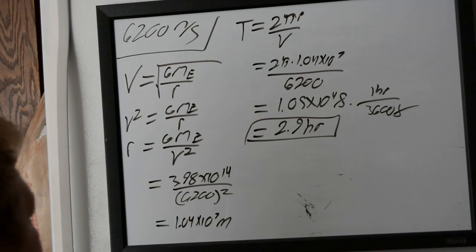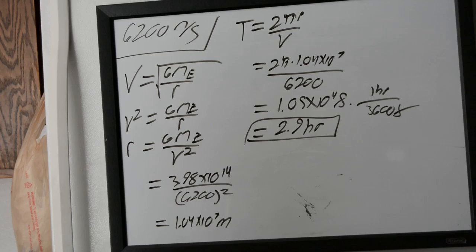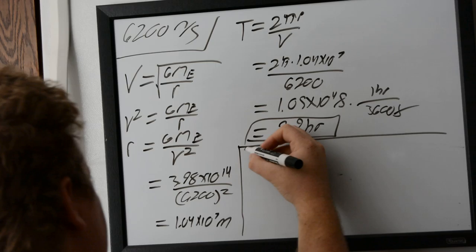And then the next part is actually pretty simple, so we'll just dig right into that. Part B asks us to find our radial acceleration. So we know, again from chapter 3,